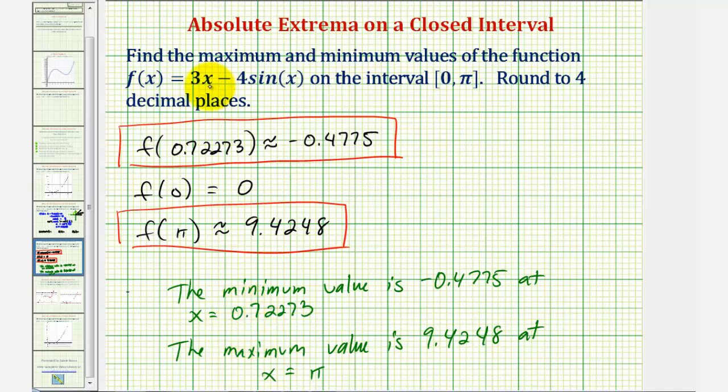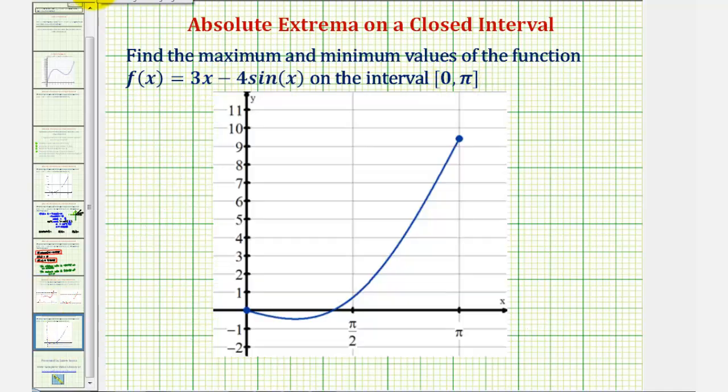Let's finish by analyzing the graph on this closed interval. It's a little hard to tell, but notice how the smallest function value on this closed interval looks like it is approximately -0.4775. And it occurs at this x value, which is approximately 0.72273. And the largest function value on this closed interval is approximately 9.4248, which does occur at x equals pi radians. I hope you found this helpful.